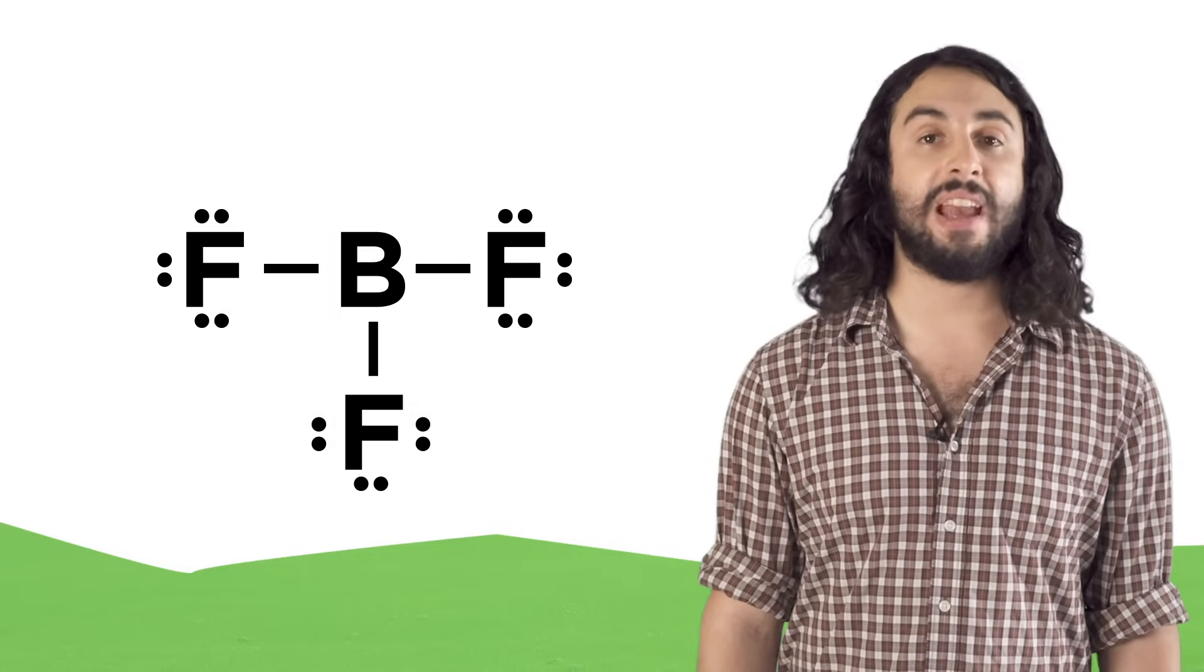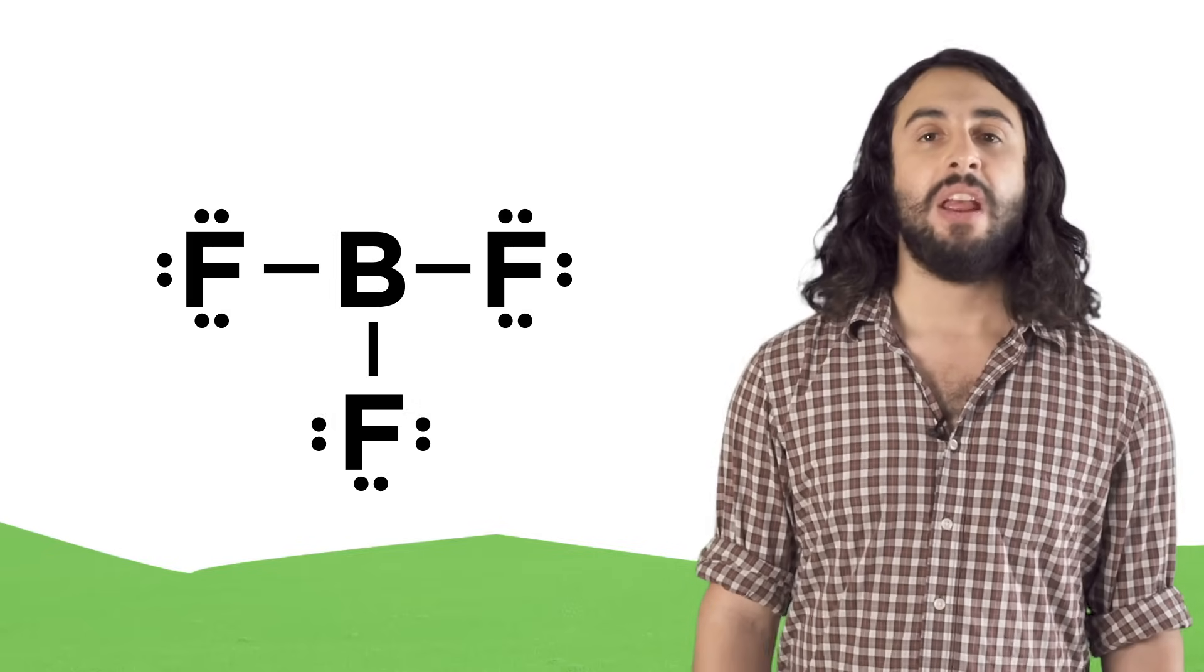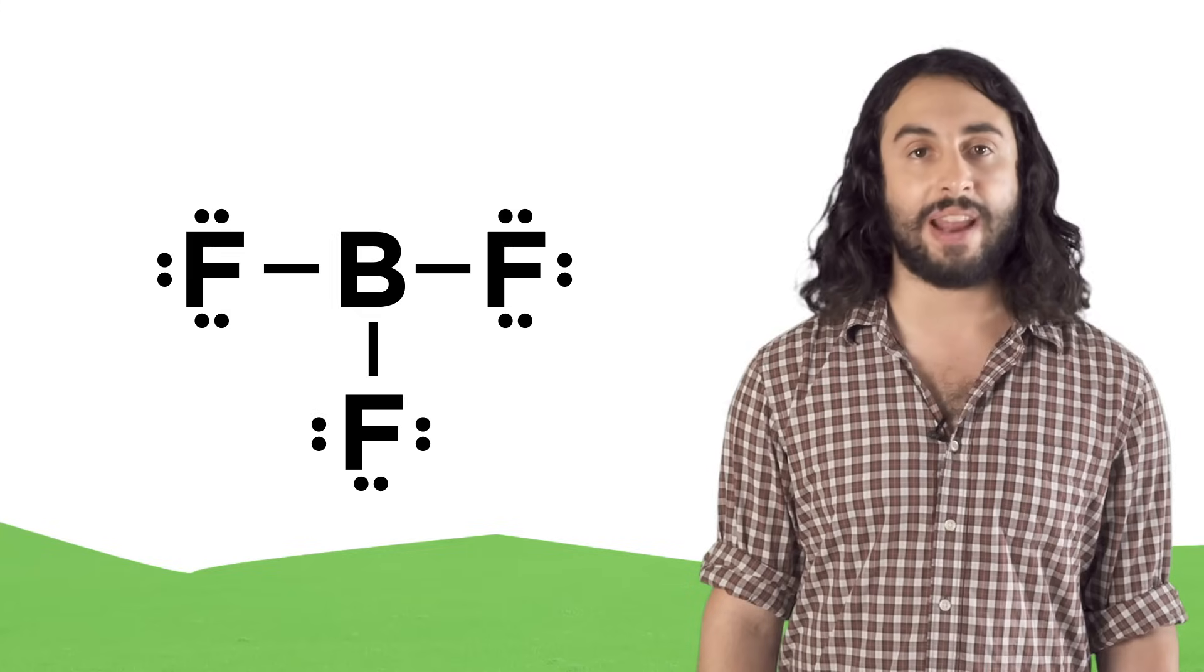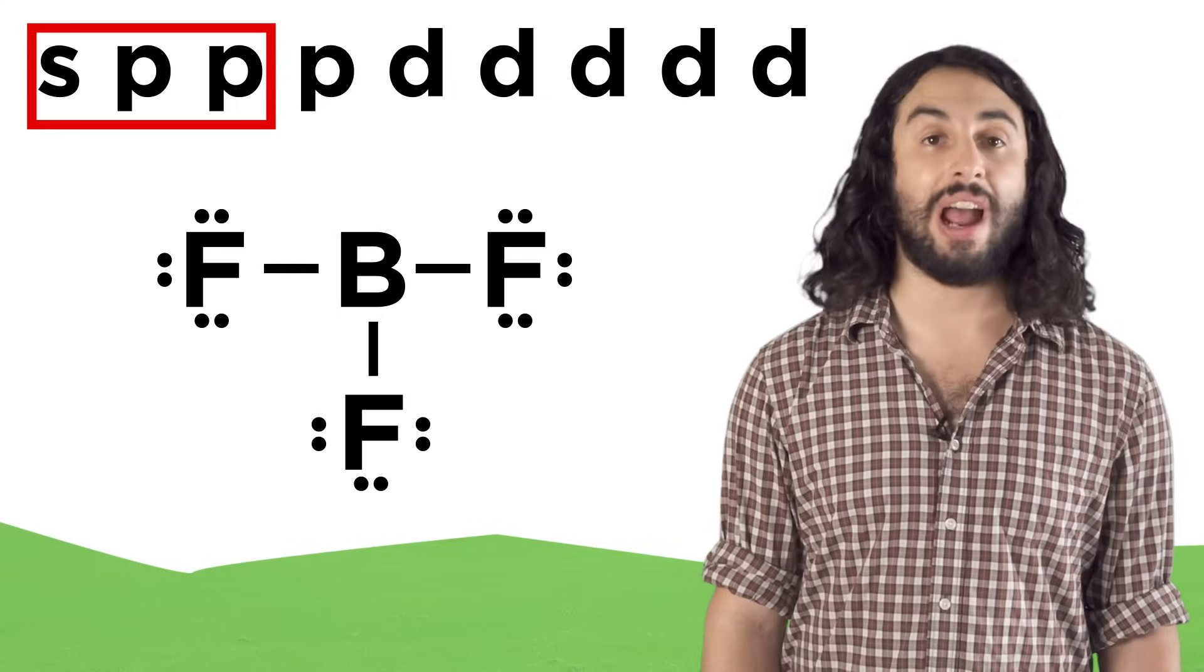Look at a molecule like BF3. Boron has three valence electrons, so it can make three bonds. That means that there are three electron domains surrounding the boron atom. That makes the boron s, p, p, sp2 hybridized.